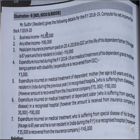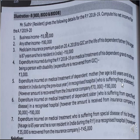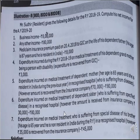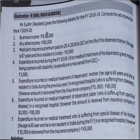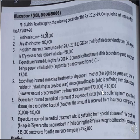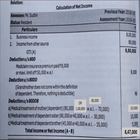Expenditure incurred on medical treatment of his dependent mother — her age is 65 years, so she is a senior citizen and a resident during the previous year, treated in a recognized hospital for specified diseases. This falls under Section 80DDB. As the assessee's mother is a senior citizen and resident in India, the maximum deduction is 1 lakh. The actual expenditure is 80,000. So 80,000 vs. 1 lakh — whichever is less is 80,000. From this, deduct whatever amount was received or reimbursed from the insurance company — 70,000 received. Balance eligible deduction: 80,000 minus 70,000 = 10,000.